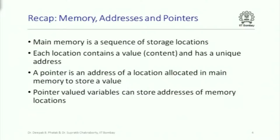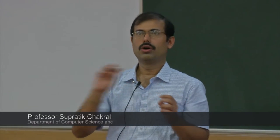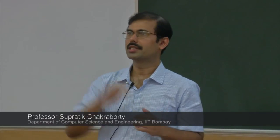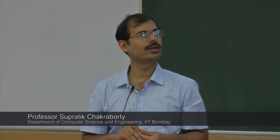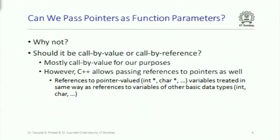This section is about pointers and functions. When a function is called, an activation record is created containing all local variables, the return program counter, the return value, and bookkeeping information — and this activation record is pushed onto the call stack in the stack segment. The question is: can we pass pointers as function parameters, and can we return pointers from functions?